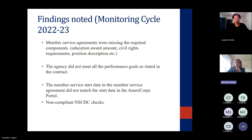Common findings in the current monitoring cycle include: member service agreements — a very common finding where information is not correct because they used a previous template or didn't update the education award amount that changes year to year; civil rights requirements not fully included; performance goals not being met; and member service start dates in the MSA not matching the start date in the portal.